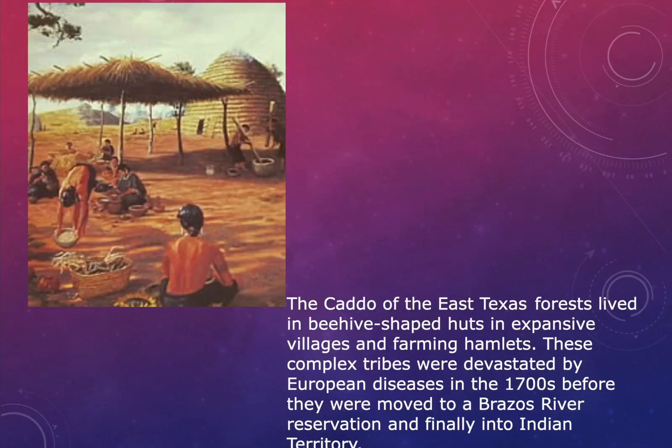In this picture, you can see an example of a Caddo village. They lived in beehive-shaped huts and had workstations the women would use during the day. You can see a temple mound in the background.